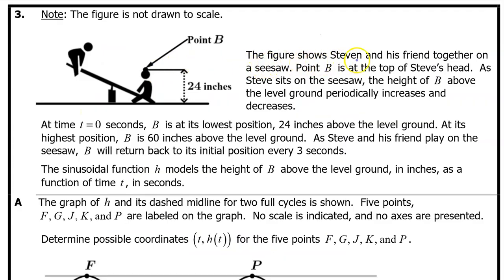The figure shows Steven and his friend together on a seesaw. Point B is at the top of Steve's head. As Steve sits on the seesaw, the height of B above the level ground periodically increases and decreases. At time t equals zero seconds, B is at its lowest position, 24 inches above the level ground. At its highest position, B is 60 inches above the level ground. As Steve and his friend play on the seesaw, B will return back to its initial position every three seconds. The sinusoidal function h models the height of B above the level ground in inches as a function of time t in seconds.